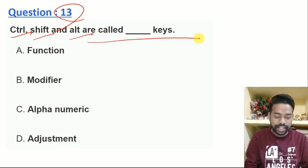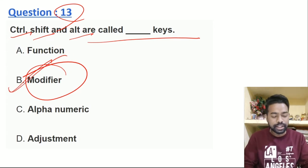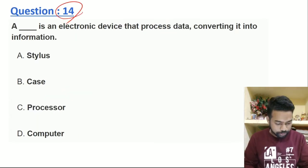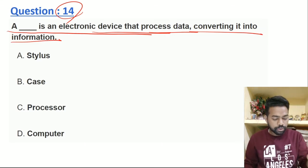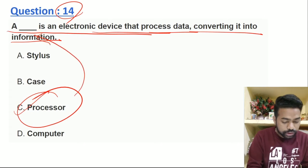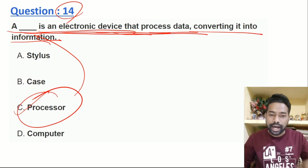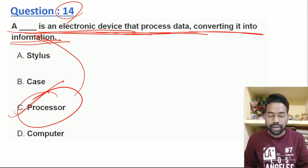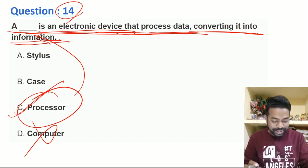Control, Shift, and Alt are modifier keys. What is a modifier key? The answer is: it changes the function of another key when pressed together. The answer to the question is that process data converting into information — the answer is processor. Processor is an electronic device that processes data, converting it into information. Processor can convert data to information.